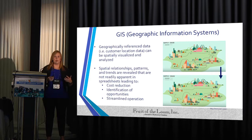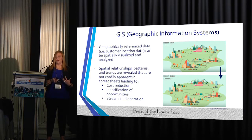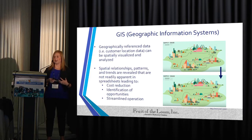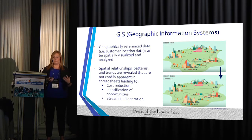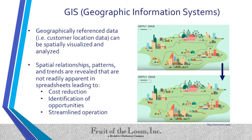GIS — geographic information systems — was my background, looking into geographically referenced data and how it can be spatially visualized and analyzed. We use GIS at Fruit of the Loom not only for logistics but also for sales opportunities and streamlining operations. For this supply chain logistics example, we can look at routing we're currently doing throughout the supply chain and layer data together from consumers to distribution centers to the different roads in the United States to create efficient routes.